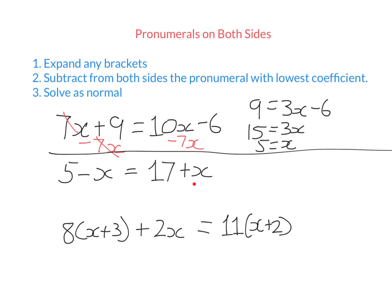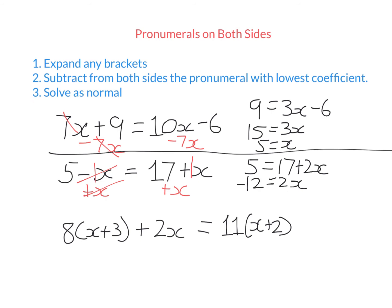So what would I do here? I have an x on both sides. The coefficient of this x is actually negative 1, whereas here it's positive 1. So I'm going to subtract negative x, which is the same as adding x to both sides. That will get rid of x on this side, because subtracting and adding x undo each other. If I add x to both sides, I end up with 5 equals 17 plus 2x. Now I have an equation where x is only in one spot. I subtract 17 from both sides and divide each side by 2, and I get x equals minus 6.